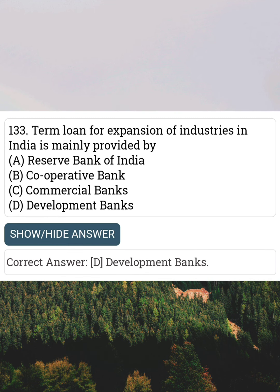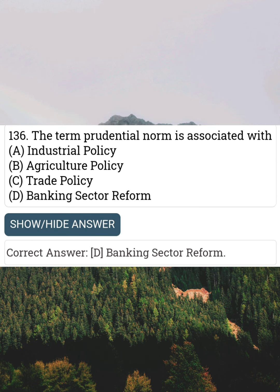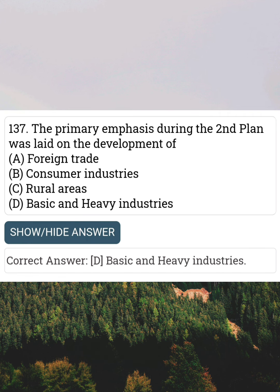Term loan for expansion of industries in India is mainly provided by Answer D: Development Banks. The prudential norm is associated with Answer D: Banking sector reform. The primary emphasis during the second plan was laid on the development of Answer D: Basic and heavy industries.